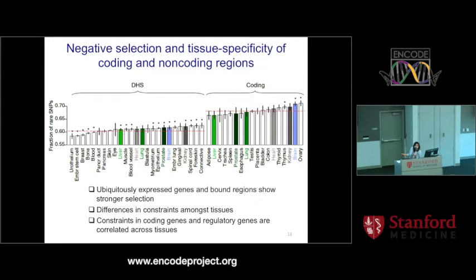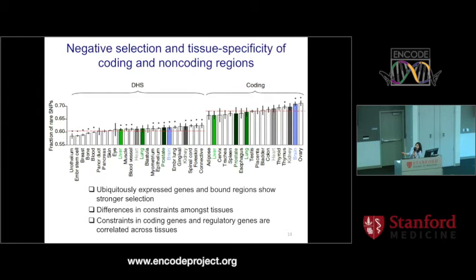We could also look at tissue specificity of regulatory regions. Using DNase hypersensitivity sites from different tissues — data from John Stam's lab and ENCODE — along with coding genes and tissue-specifically expressed genes, we looked at the fraction of rare variants. The fraction differs across tissues, showing tissue-specific selection constraints. Ubiquitously expressed genes and bound regions generally show stronger selection. Constraints in coding genes and regulatory regions are correlated across tissues — for the six tissues for which we had both regulatory regions and tissue-specific gene expression data, they were correlated.